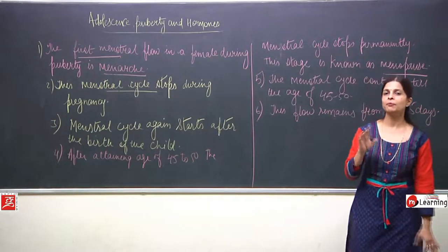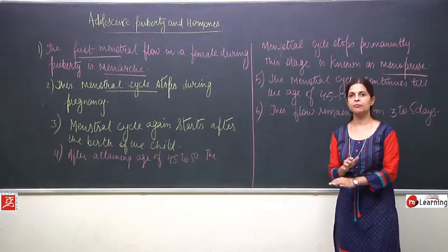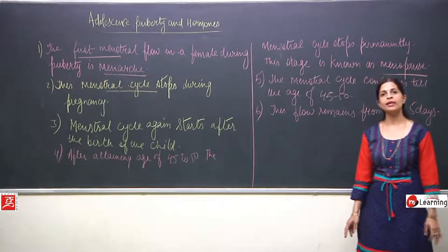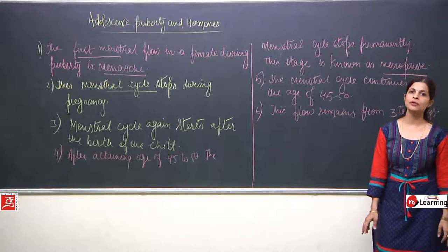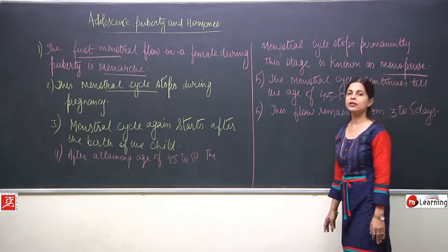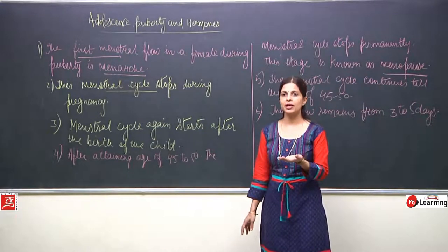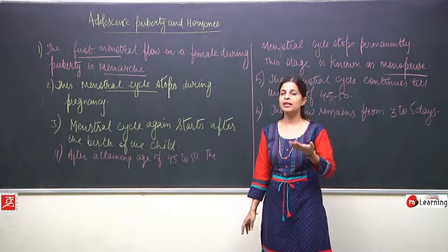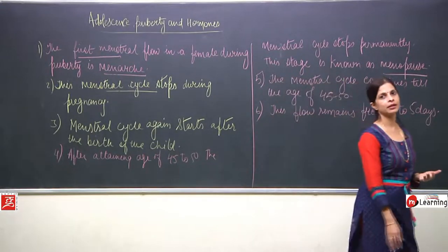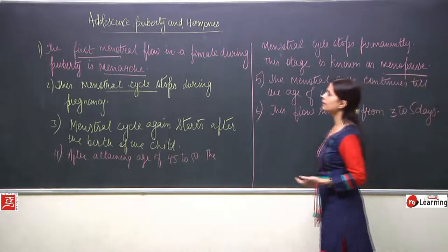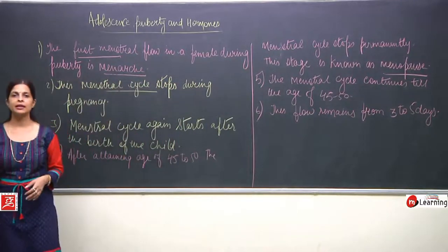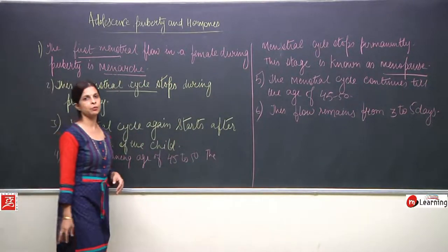Whenever a female becomes pregnant, the menstrual cycle will stop temporarily — that means ovulation will stop. After the pregnancy, when the female gives birth to the child, the menstrual cycle will begin again. But after the female attains the age of 45 to 50, the menstrual cycle stops permanently, and this is known as menopause.